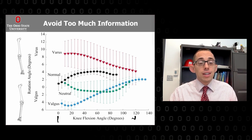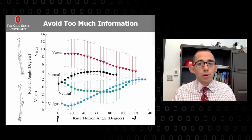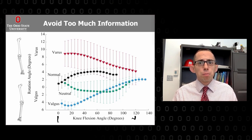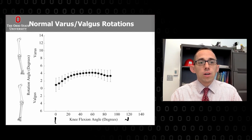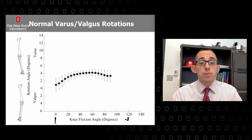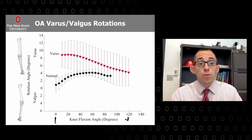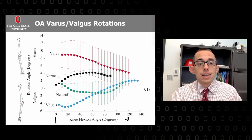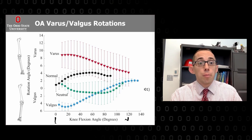Avoid complicated slides with multiple lines going in multiple directions. Instead of blasting the audience with a complex slide all at once, dole it out over a couple of slides. For example, a plot of normal varus-valgus knee rotations as a function of knee flexion angle — showing varus osteoarthritis, valgus, and neutral cases — is best walked through by adding one line at a time rather than presenting all lines simultaneously.